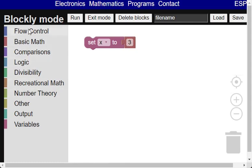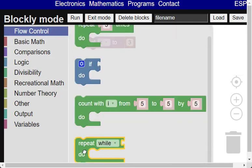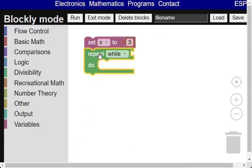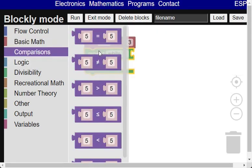Now we have to drag the repeat block to the workspace to be just below the set variable block. The repeat block is in the flow control category. The repeat loop must be done while the prime x is less or equal to 1000.